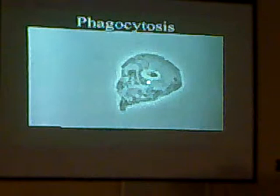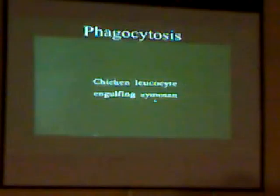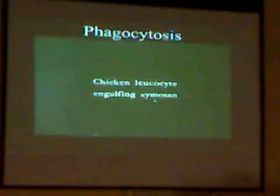Within the phagosome, granules visible inside the cell begin to pop and fuse with the vacuole. Phagocytes can engulf quite large particles. In chicken leukocytes, which have very large granules, you can clearly see some of these granules beginning to fuse with the phagosome to deliver their contents.